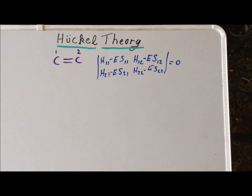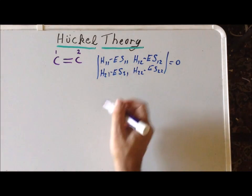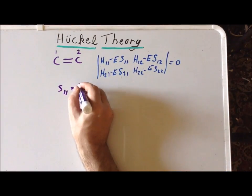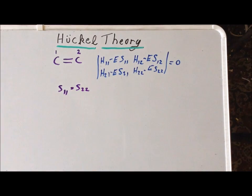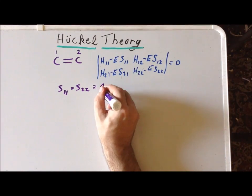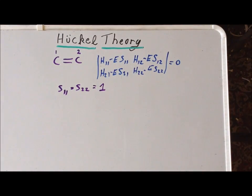One of the first things that we do is realize that S₁₁ equals S₂₂, this is the self-overlap. This is the overlap of an atomic orbital with itself. And since these orbitals are normalized, this overlap integral is equal to 1.